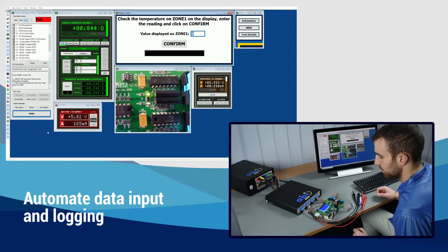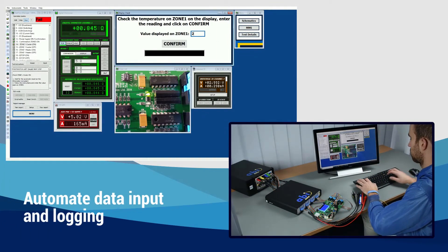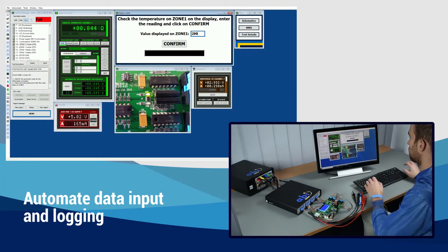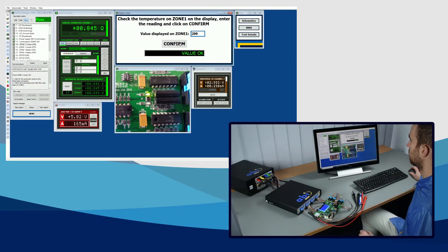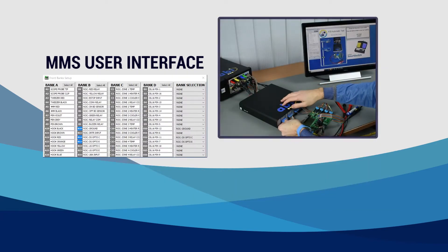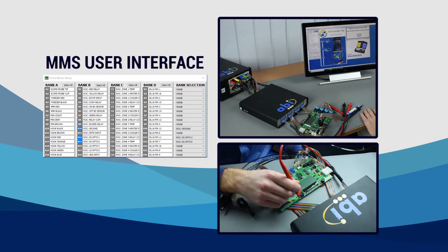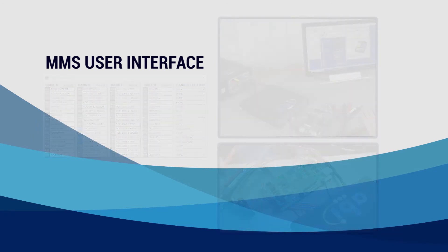Executing complex tests and completing data acquisition processes become much simpler. In each step, 16 unique paths can be created between the instruments connected to the rear of the MMS and the accessories, probes or test fixtures plugged into the front of the unit.